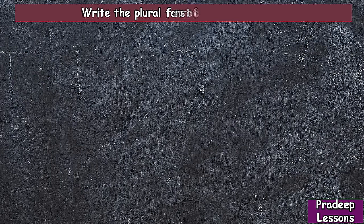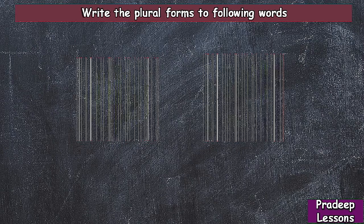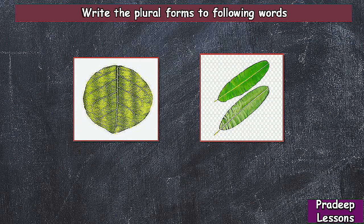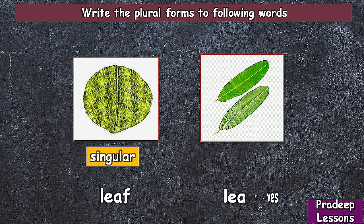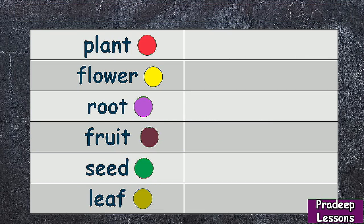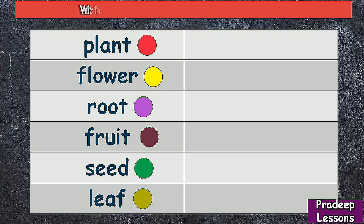Write the plural forms of the following words. Here only one leaf is there — it is singular. More than one leaf means leaves — leaves is the plural. Now without pictures we will write the plural forms.